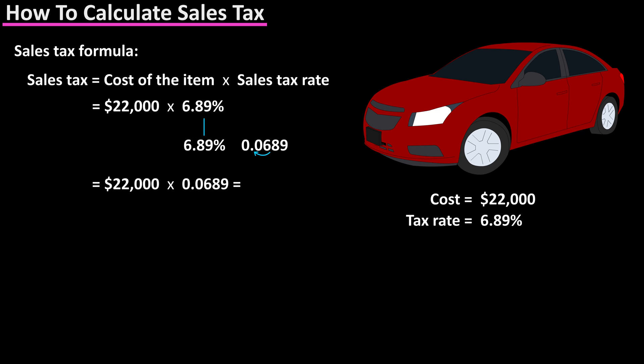Now using a calculator, we have $22,000 times .0689, which gives us a final answer of $1,515.80.